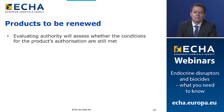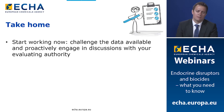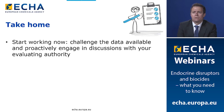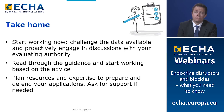A few take-home messages: we need to start working now — the criteria is applicable. As applicants, you need to challenge the data you have available and proactively engage in discussions with your evaluation authority. Read through the guidance and start working based on its advice. All actors — applicants, ECHA, and member states — need to plan resources and expertise to prepare and defend applications, and ask for support if needed.